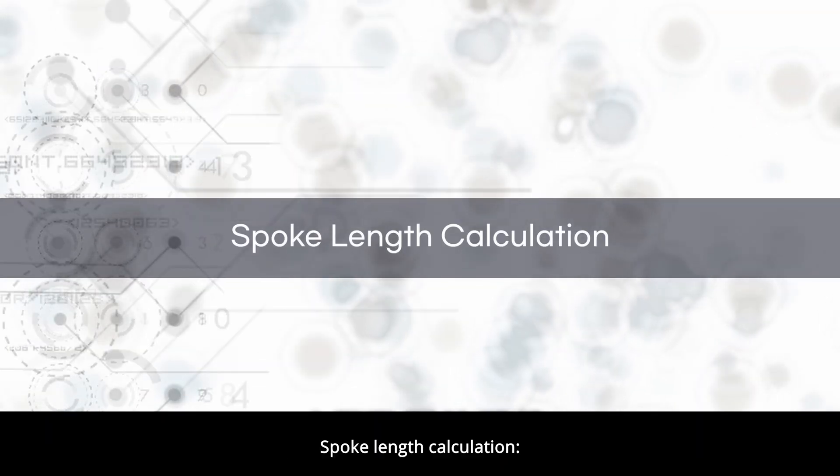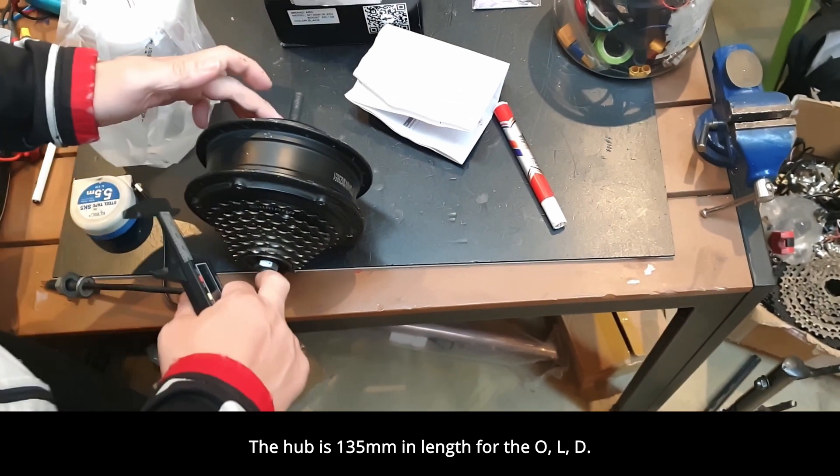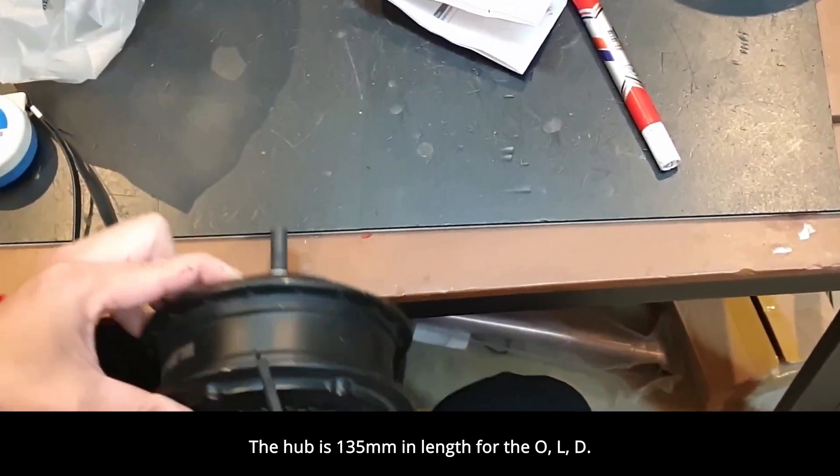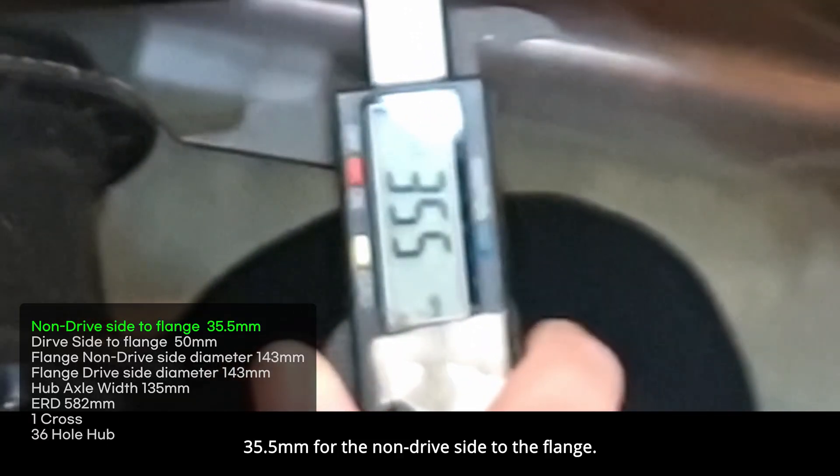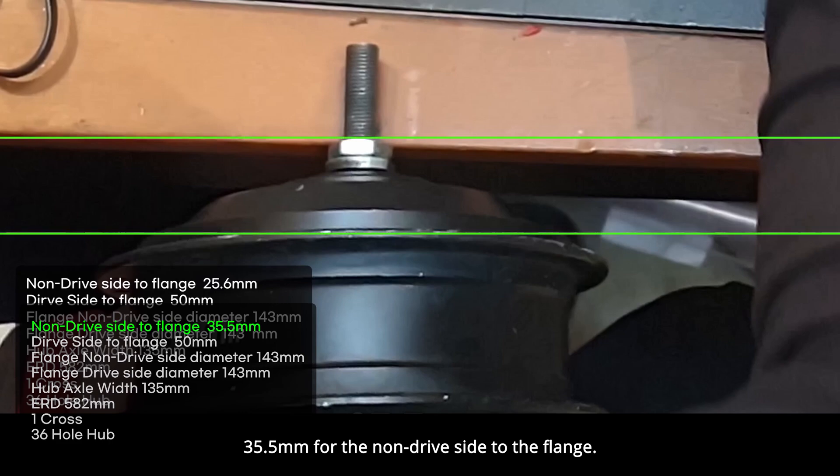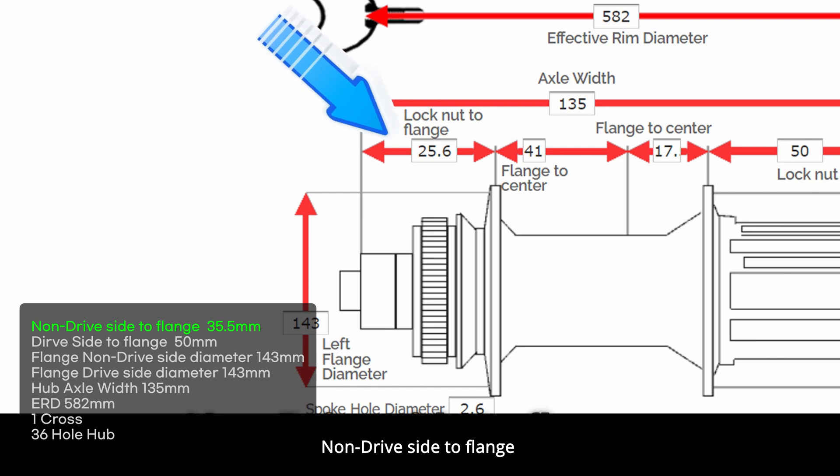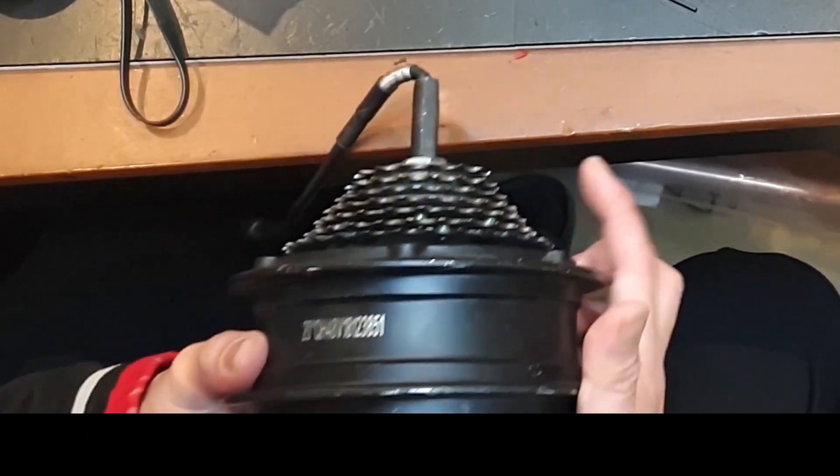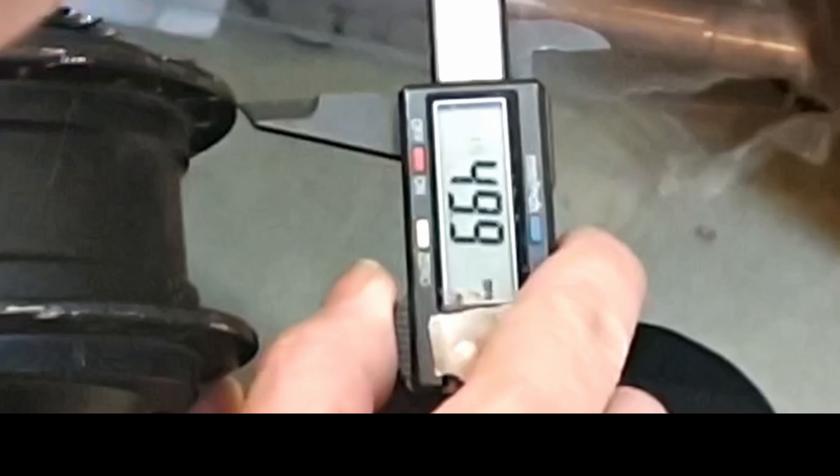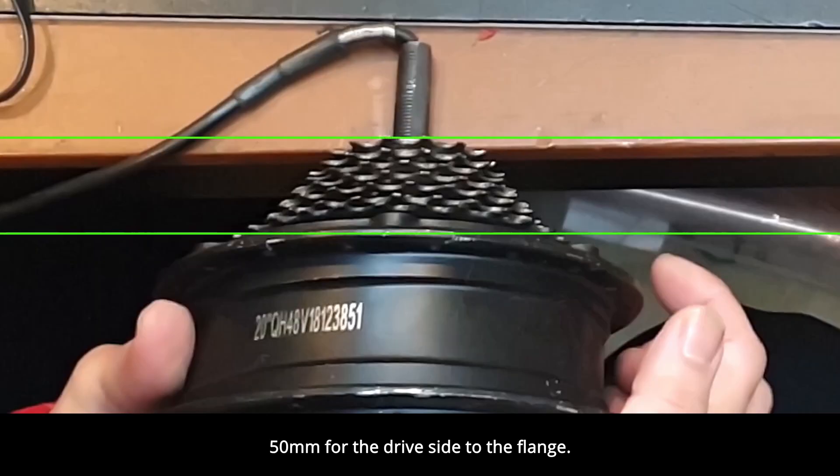Spoke length calculation. The hub is 135 millimeters in length for the OLD. 35.5 millimeters for the non-drive side to the flange. 50 millimeters for the drive side to the flange.